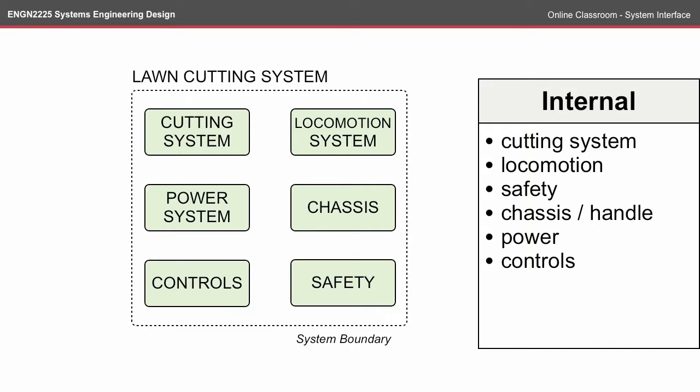This is where our system boundary is defined. Each of these subsystems could be drilled down further. For example, the cutting system is made up of a number of components. To define that this is all what we're considering within our system, we draw a dotted line around it called the system boundary.